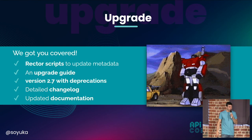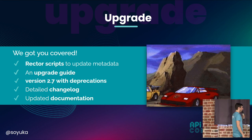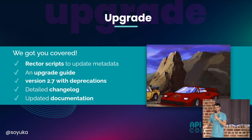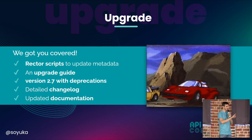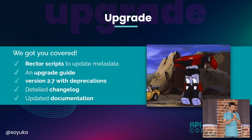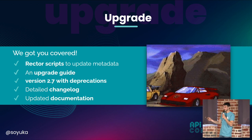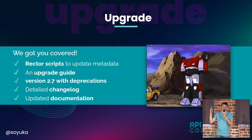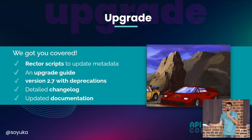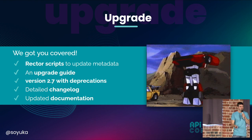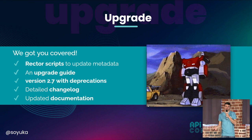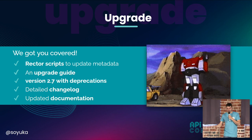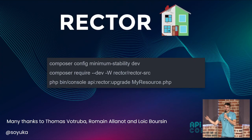These are quite a lot of changes. The main question you may have now is: how can we upgrade? Don't worry, we got you covered. We have refactoring scripts to update the metadata. There will be an upgrade guide. The 2.7 version has lots of deprecations, and if you install 2.7 first, it will be a breeze to go to 3.0. Obviously a detailed changelog and updated documentation.